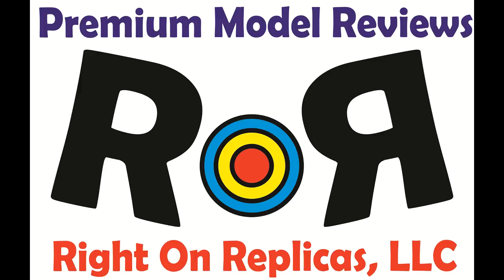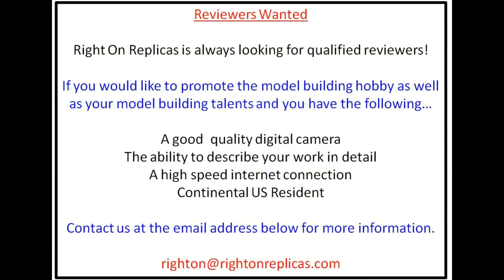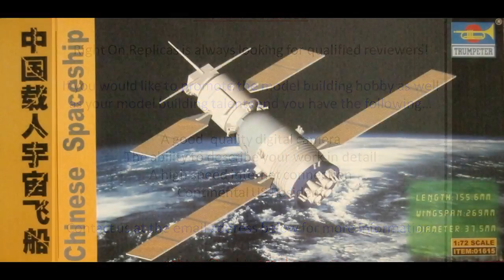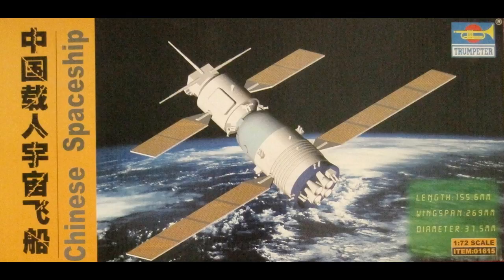Thanks for joining us at Ride On Replicas, where we're proud to bring you the best scale model kit reviews on the planet. This review covers the Shenzhou 5 spacecraft in 1/72nd scale from Trumpeter. It's kit number 01615, and it was released a few years back, but it's still available at online auction sites.